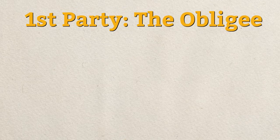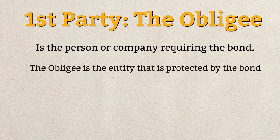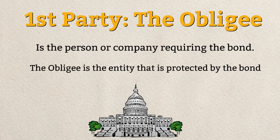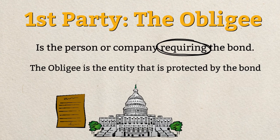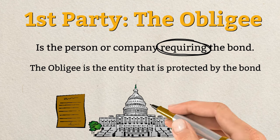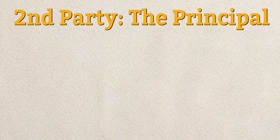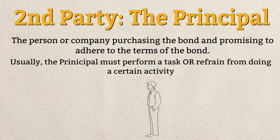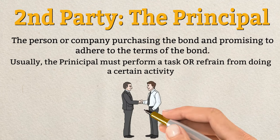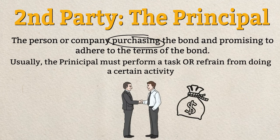First party: the obligee. The obligee is the person or company requiring the bond, and is also the entity that is protected by the bond. Second party: the principal. The principal is the person or company purchasing the bond and promising to adhere to its terms. Usually, the principal must perform a task or refrain from doing a certain activity.